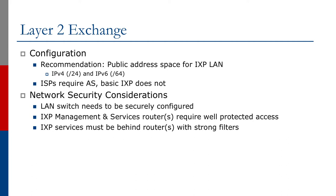For configuration, we use public IPv4 and IPv6 address space for the exchange point LAN. The regional registries have policies for exchange points, allowing them to apply for address space for the peering LAN. The network operators who turn up at the exchange points need an AS number for the BGP configuration, but the basic internet exchange point does not — it's layer 2.